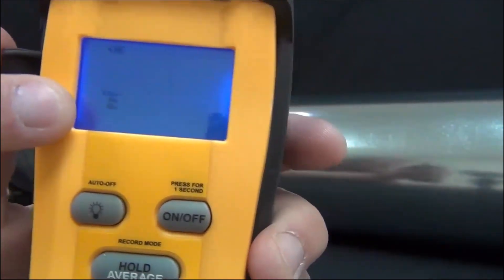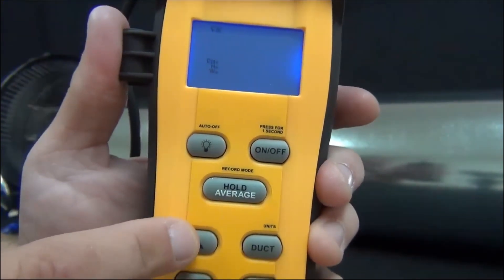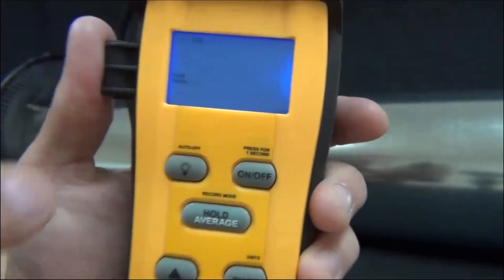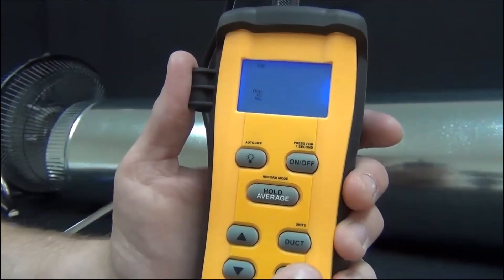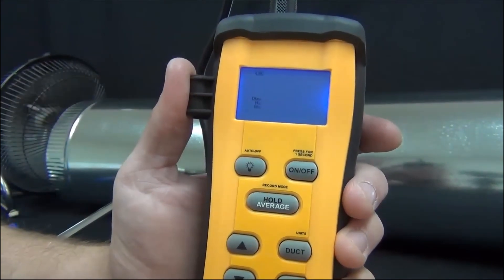And then it's going to ask you if you have the size of the duct, or by pressing the up arrow, I can enter in the free area, just depending on what information you have about that duct. What I have is the diameter, so I'm going to switch to diameter, height, and width, and press enter.